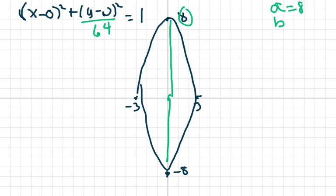Your b is 3. That's your horizontal. You're going 3 this way and 3 that way. So your b is 3, and you square it, and that's going to be over 9.